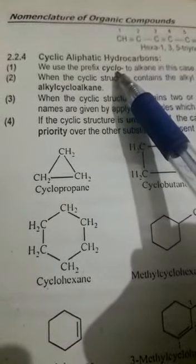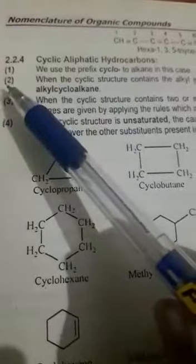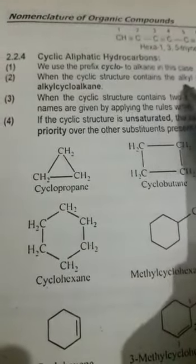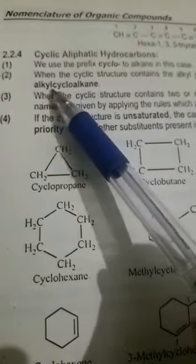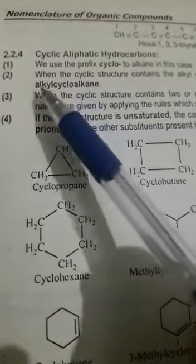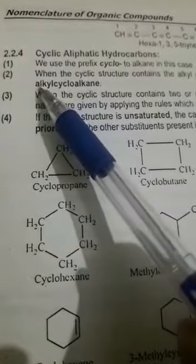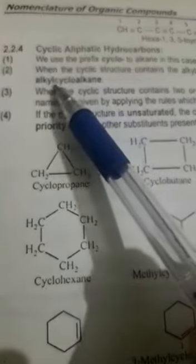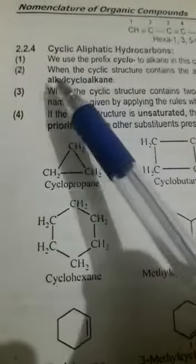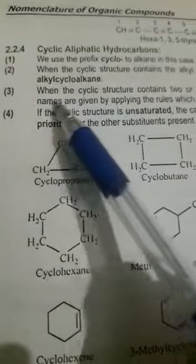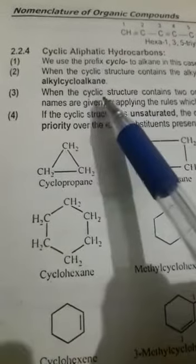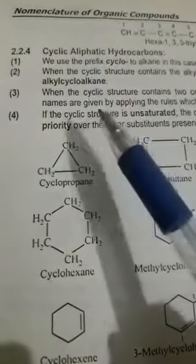Cyclo indicate کرتا ہے ring compounds کو۔ Rule number two: when the cyclic structure contains the alkyl group as a substituent، their name is alkyl cycloalkanes۔ Any substituent alkyl group پہلے لکھیں گے اس کے بعد اس کا parent name آ جائے گا cycloalkane — یعنی alkyl cycloalkane۔